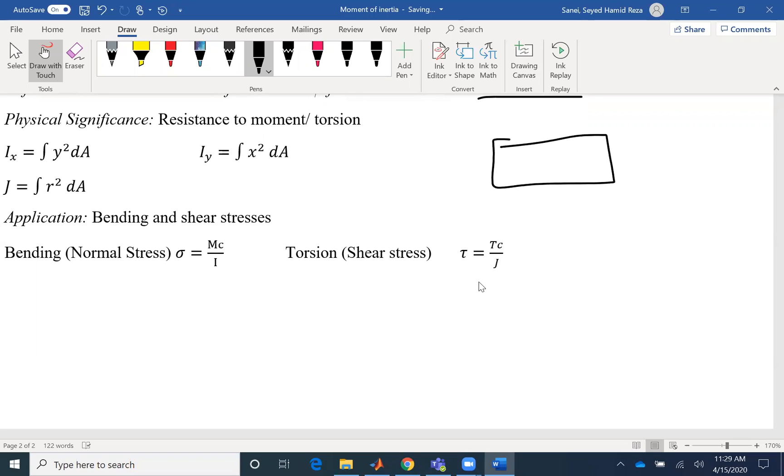Let's say if you have a rectangle and your rectangle has a height of H and width B, then IX equals IY would be 1 over 12 of BH cubed. And you can use parallel axis theorem if you are interested in other axes.